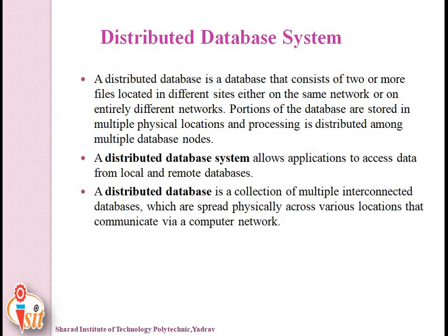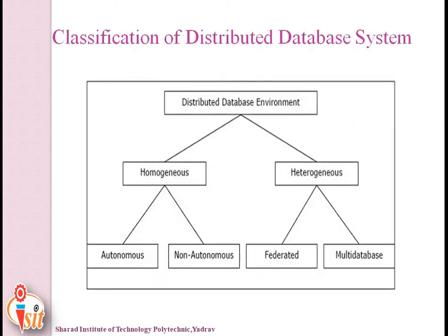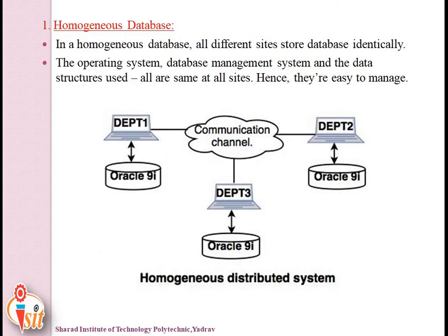The distributed database system consists of two or more files located in different sites, either on the same network or an entirely different network. It allows applications to access data from local and remote databases. Different locations are connected via a communication channel, each having their own memory and database.